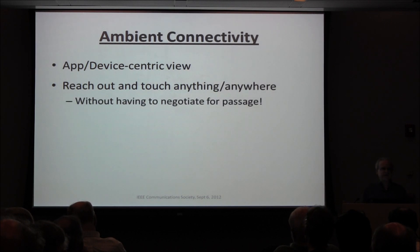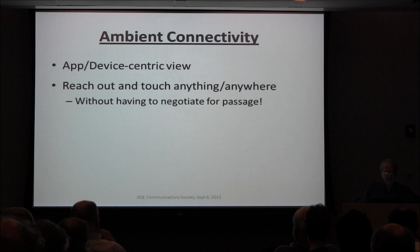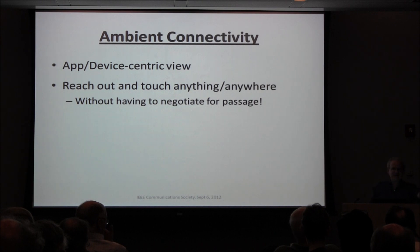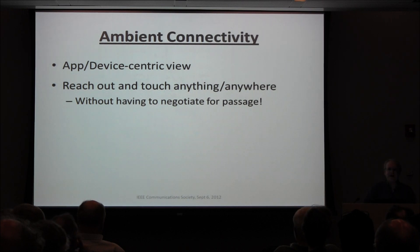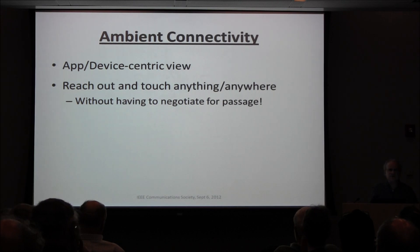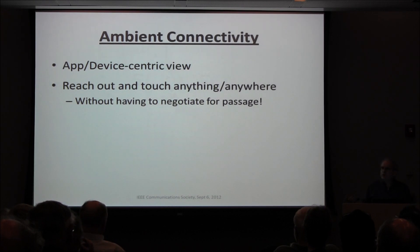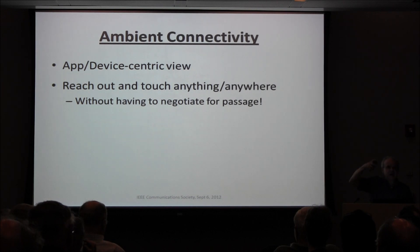The term used at the beginning was ambient connectivity — instead of thinking about the network, you think about just what you view from around you. There's connectivity everywhere, and you just connect without worrying about it. It's a very app- and device-centric view. You just reach out and you can reach anything, anywhere — you don't have to negotiate with anybody for passage. In Starbucks, it just works. You don't have to run special wires — get power to the light and just glue a light switch on anywhere. You can move the furniture, move the switch, without begging somebody to bash a hole in the wall.